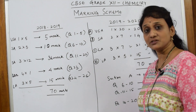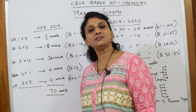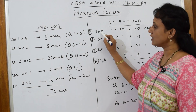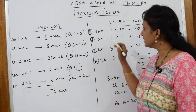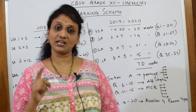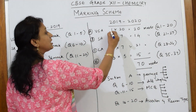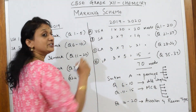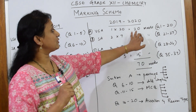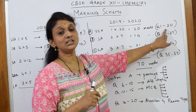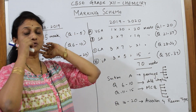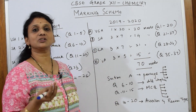Now in the 2019-20 pattern, looking at the CBSE sample paper that has been released, in Section A, one-mark questions are given — 20 of them. So one-mark questions start from question number one and go up to question number 20, where you write very short answers.